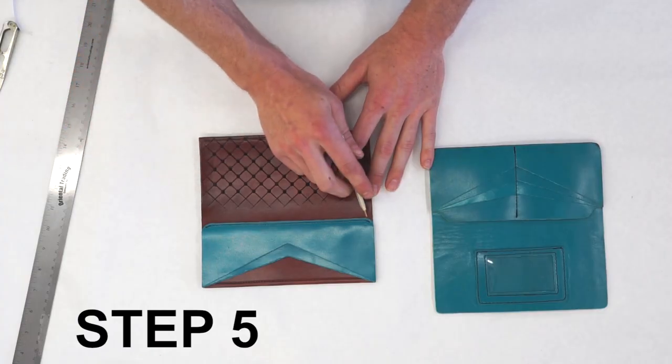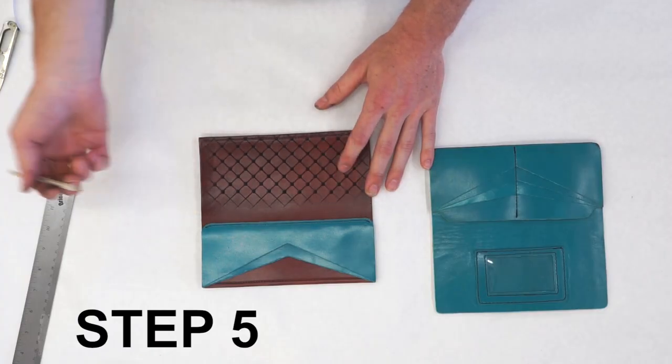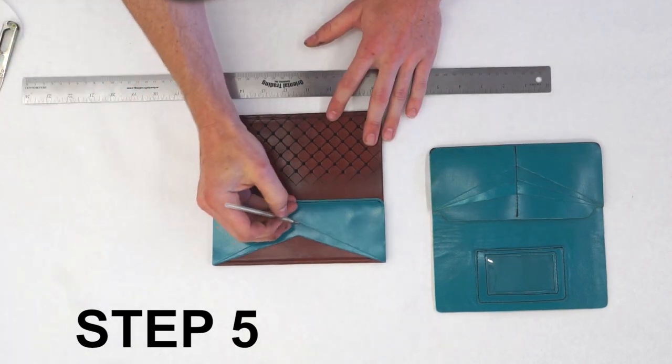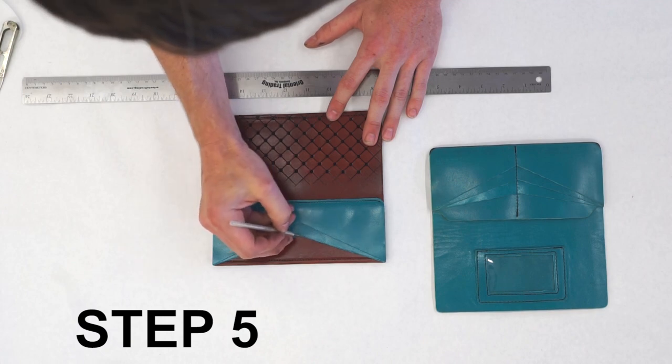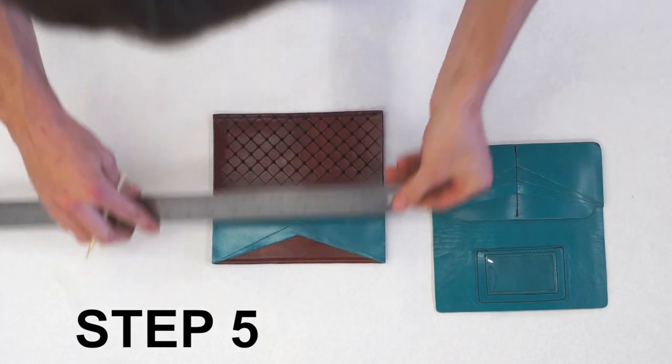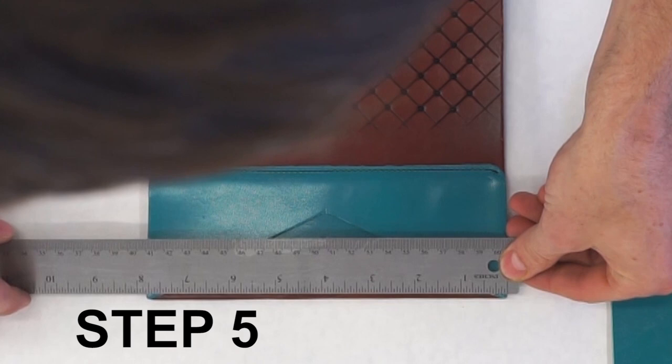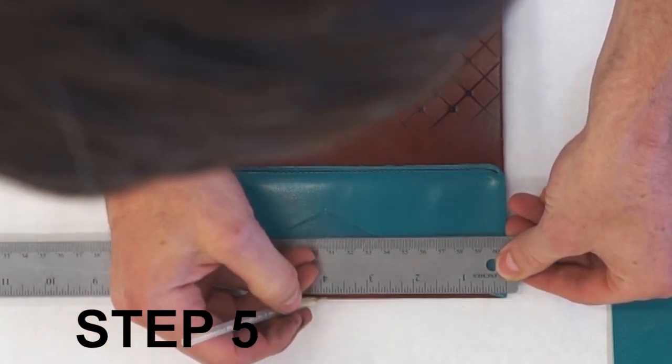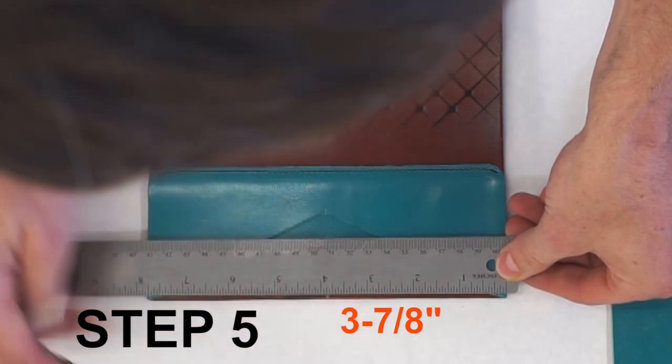Alright, once we have our stitch across the bottom of the second pocket, we're going to go ahead and take a silver marking pen and mark the center of both pockets right in the notch at the bottom. And then I'll usually measure across the back, which is seven and three quarters, make a mark at three and seven eighths, which is half way.